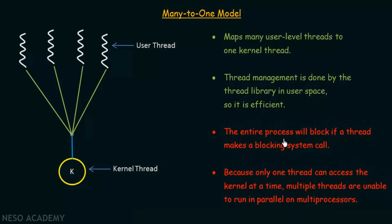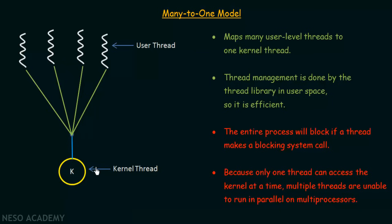Now let us see the limitations of this model. The entire process will block if a thread makes a blocking system call. Since all user threads are mapped to one kernel thread, if one thread makes a blocking system call that kernel thread becomes blocked, and since all threads are mapped to it, they are all blocked. So if one thread makes a blocking system call the entire process will be blocked.